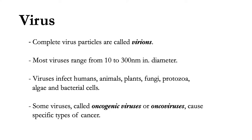Complete virus particles, called virions, are very small and simple in structure. Most viruses range in size from 10 to 300 nanometers in diameter, although some viruses are much bigger, like the Ebola virus, which can reach up to 1 micrometer in length. Scientists were unable to see viruses until electron microscopes were invented in the 1930s, and no type of organism is safe from viral infections. Viruses infect humans, animals, plants, fungi, protozoa, algae, and bacterial cells. Some viruses, called oncogenic viruses or oncoviruses, cause specific types of cancer, including human cancers such as lymphomas, carcinomas, and some types of leukemia.